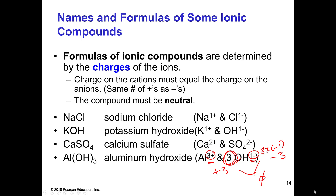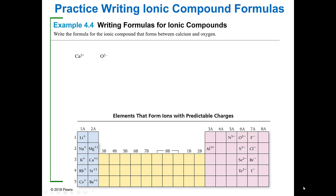If you recall, I told you to do something when we looked at the periodic table in a previous chapter. I said put +1, +2, +3, skip, −3, −2, −1. Those are your charges. If you can remember that pattern, you can very easily put these compounds together.